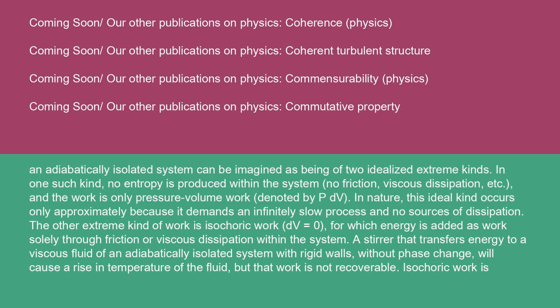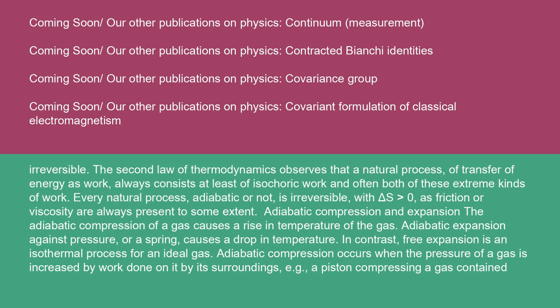A stirrer that transfers energy to a viscous fluid of an adiabatically isolated system with rigid walls, without phase change, will cause a rise in temperature of the fluid, but that work is not recoverable. Isochoric work is irreversible. The second law of thermodynamics observes that a natural process of transfer of energy as work always consists at least of isochoric work and often both of these extreme kinds. Every natural process, adiabatic or not, is irreversible with ΔS > 0 as friction or viscosity are always present to some extent.